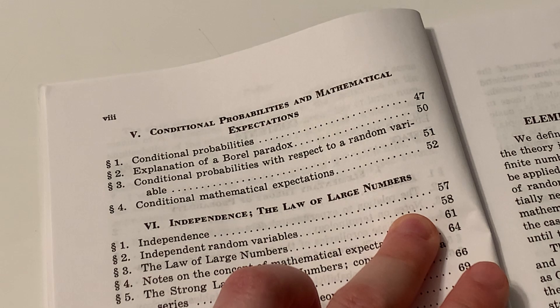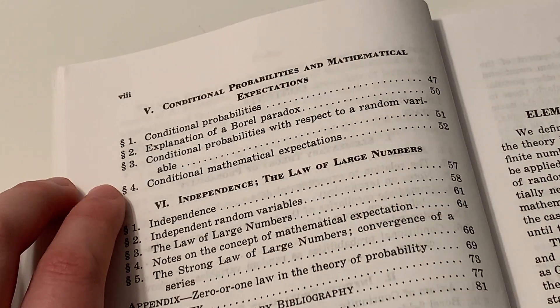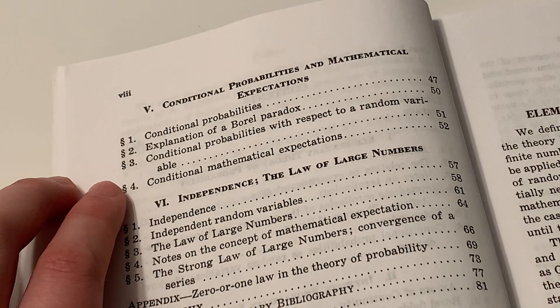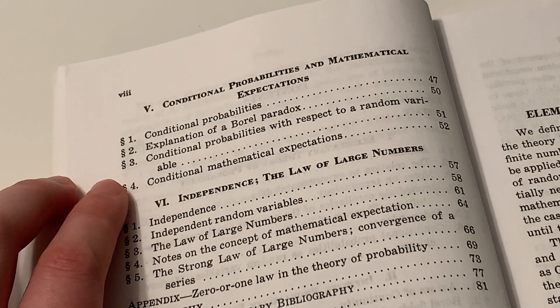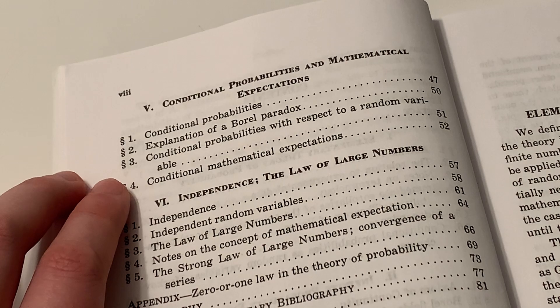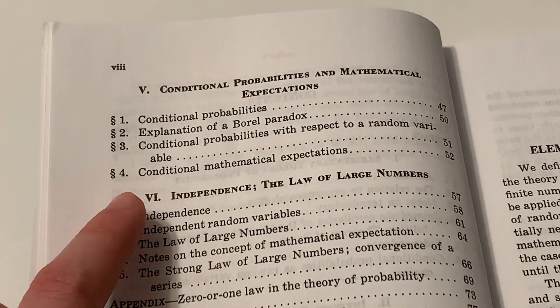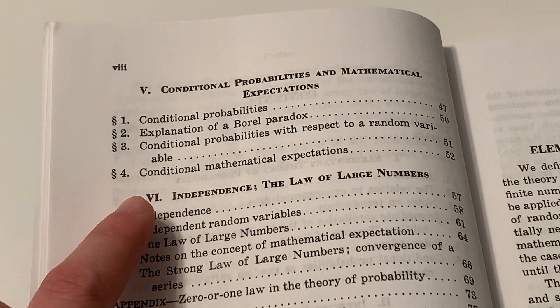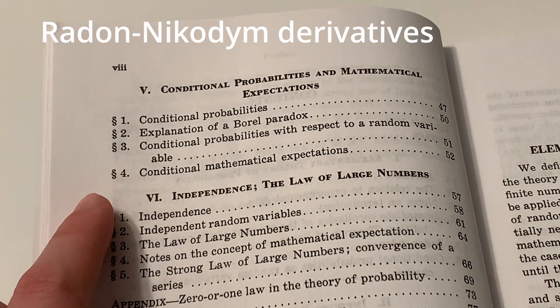Chapter 5 is about conditional probabilities and mathematical expectations. And this is another highlight of Kolmogorov's theory. Because prior to the advent of Lebesgue's theory of measure integration, it was a conundrum to define conditional probabilities and expectations rigorously. Conditional expectations are defined using the notion of Radon-Nikodym derivatives from measure theory.